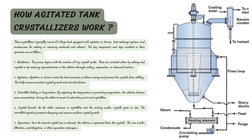After agitation comes controlled cooling or evaporation, where you cool down the solution or allow some liquid to evaporate. This makes the solution become more concentrated, which is ideal for crystal formation. As you cool or evaporate, crystals start to form and grow. The agitator keeps them separate and ensures they don't clump together, resulting in proper crystal formation.